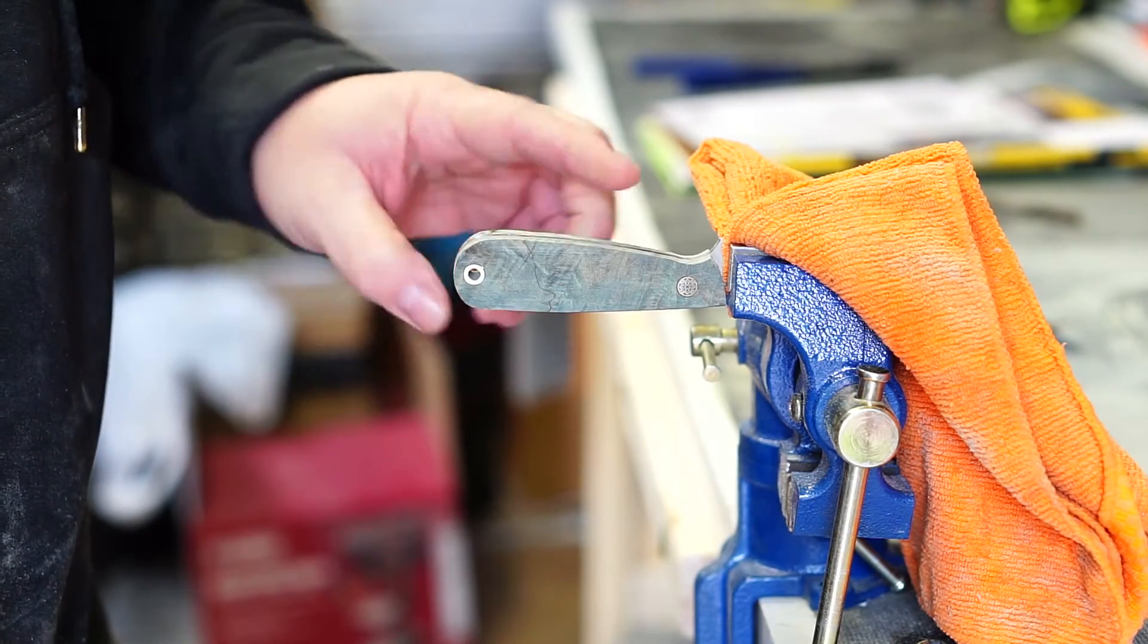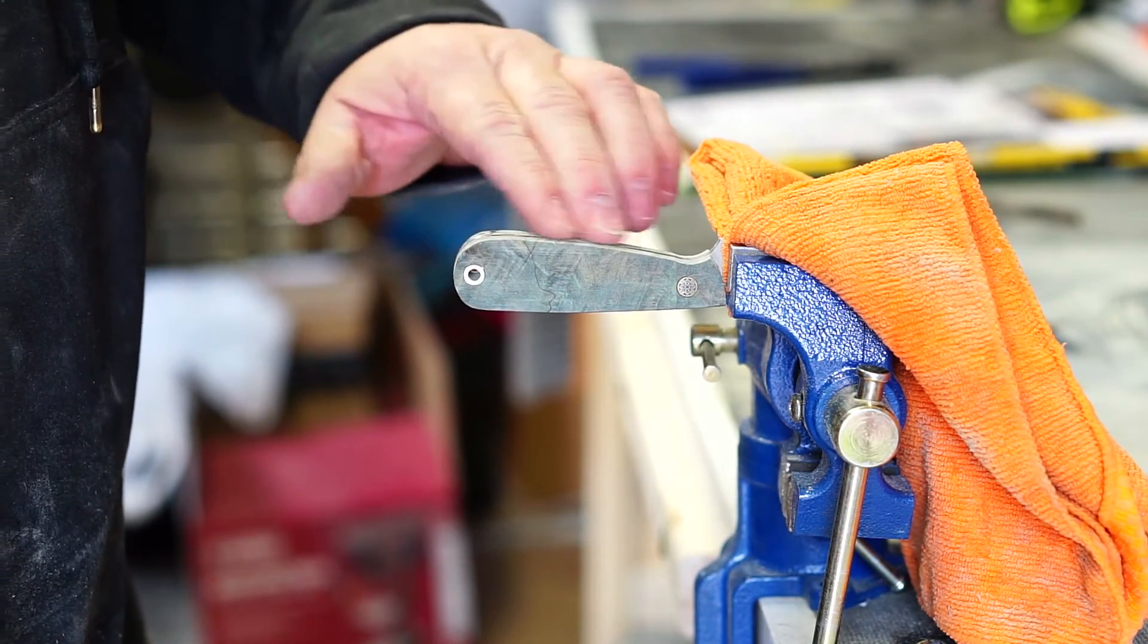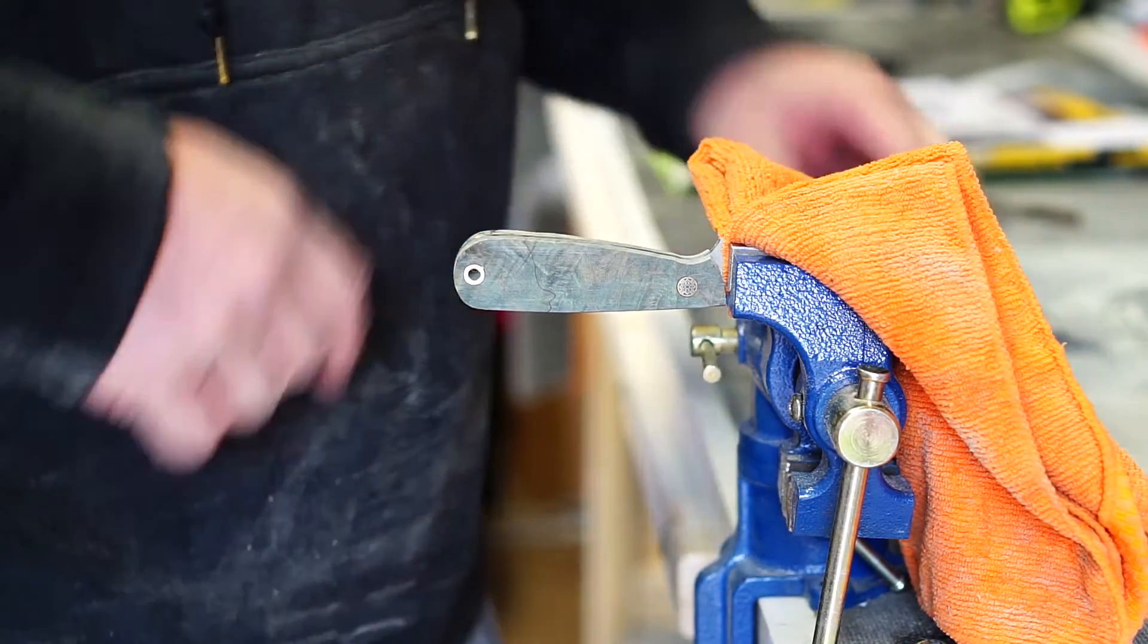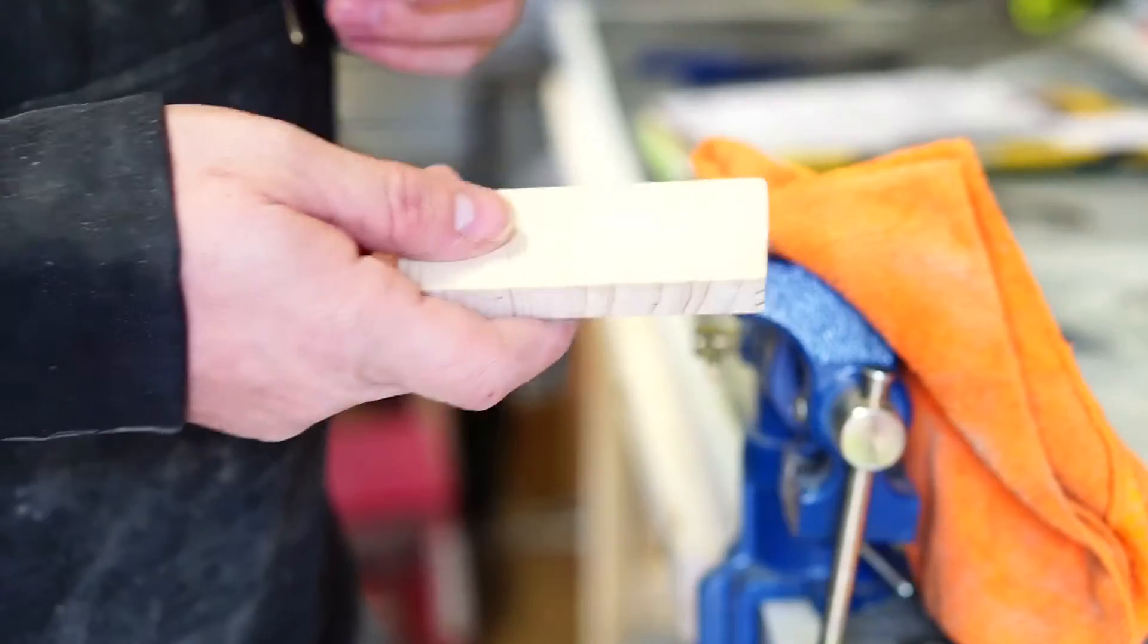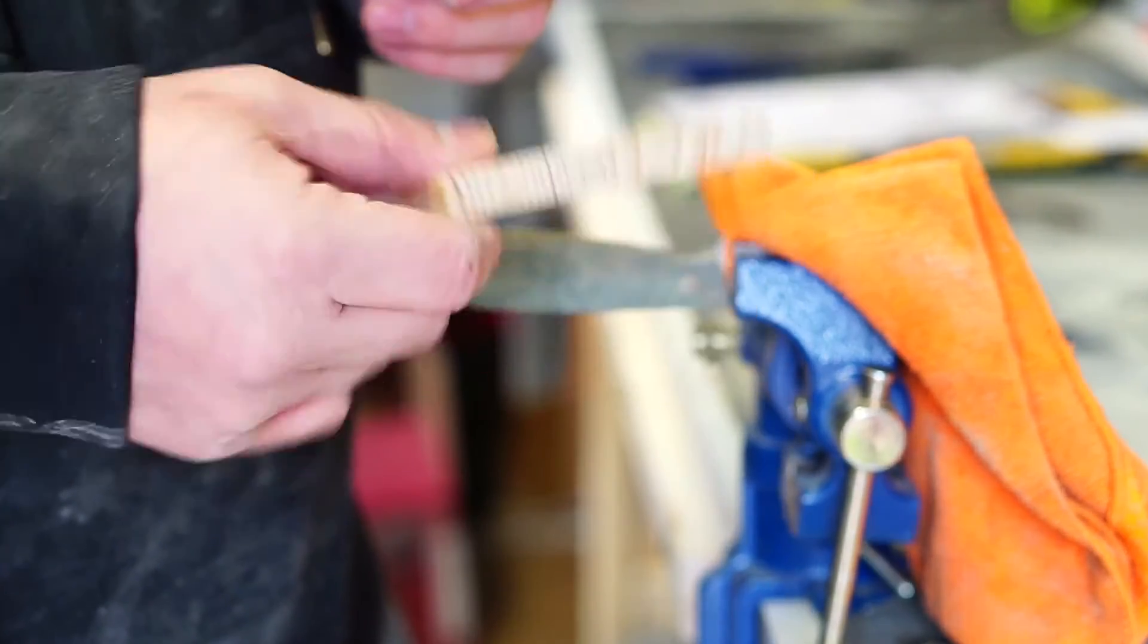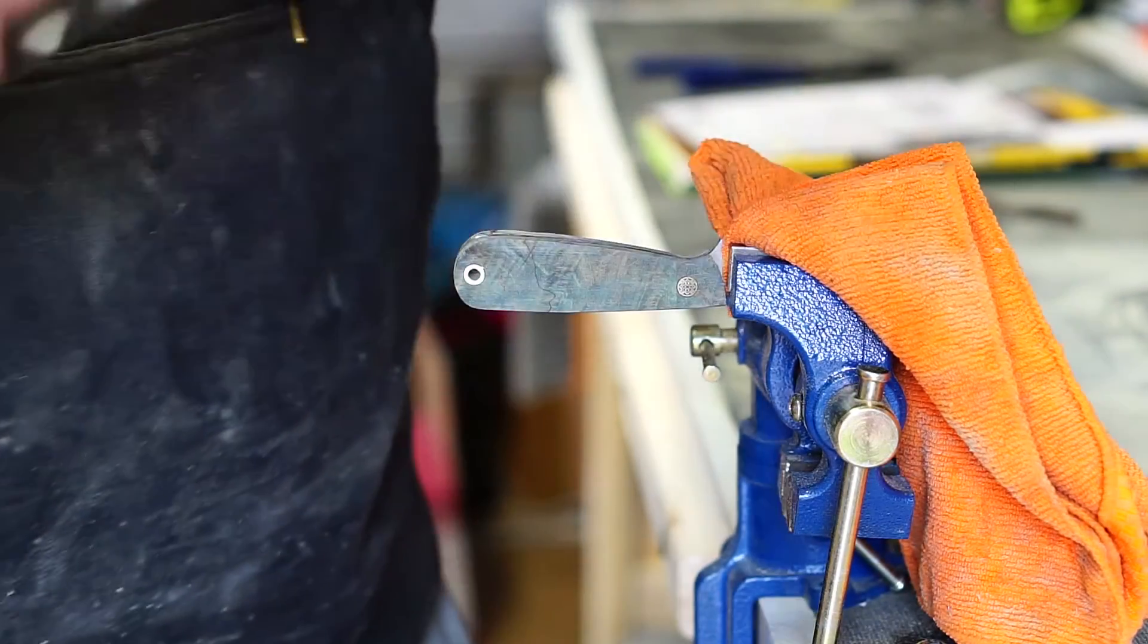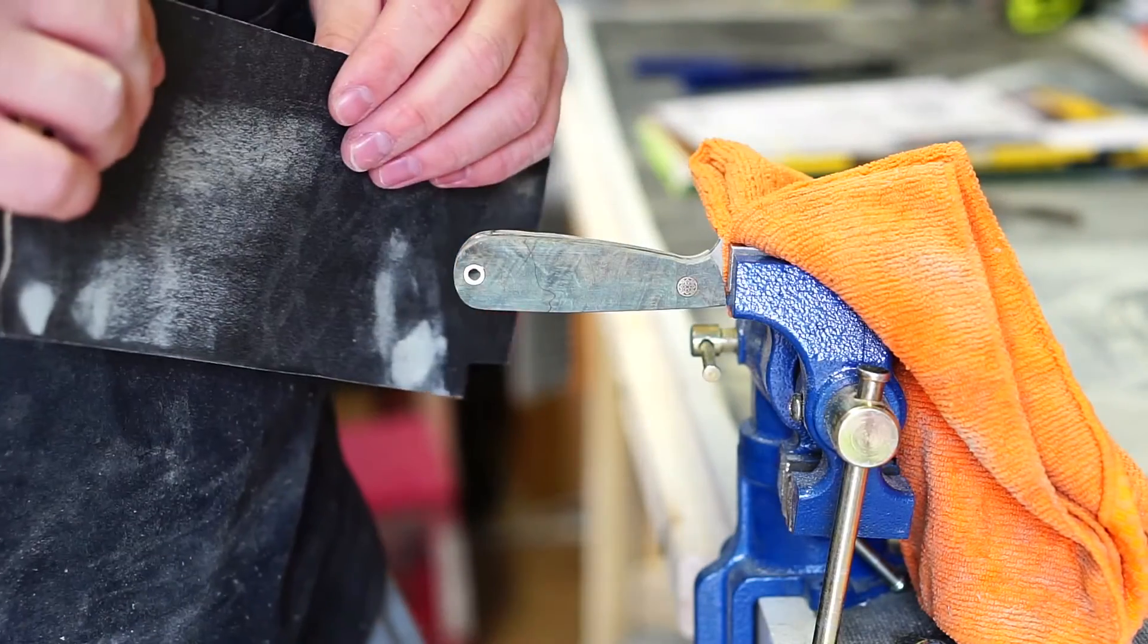Excess wood from around the tang, mostly removed. There's a little bit left around here, and I'm going to do that with a roughed out piece of wood as a sanding block, starting with 150 and working my way up from there.